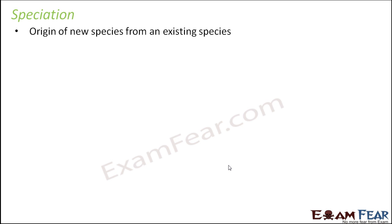Speciation is nothing but the origin of new species from an existing species. And whenever speciation takes place as a result of evolution, that type of evolution is called macro evolution. If the species itself is a new species, that means macro evolution has taken place — that is, evolution has taken place on a larger scale.